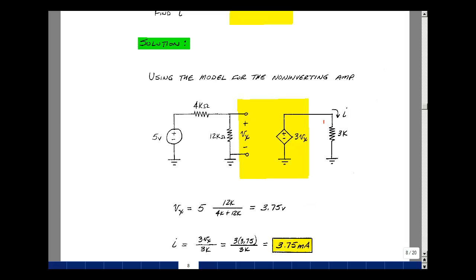The current I is just going to be the voltage across the 3K resistor divided by 3K. But this voltage is 3 times V sub X, and that's 3 times 3.75. We're going to divide that by the 3K. The 3s cancel, and we get 3.75 divided by 1K, which is 3.75 milliamps.